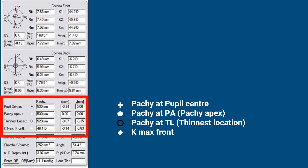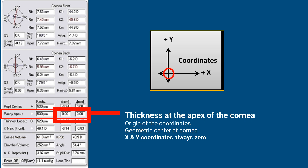In the third set there are four values. The plus sign is the pachymetry at the pupil center. The white circle is pachymetry at the Pachyapix. The black circle is the pachymetry at the thinnest location. And the cross-rectangular marker is Kmax on the front surface. The Pachyapix is the geometrical center of the cornea where the origin of the coordinates starts — X is 0 and Y is 0 there — and all other values are measured relative to it.